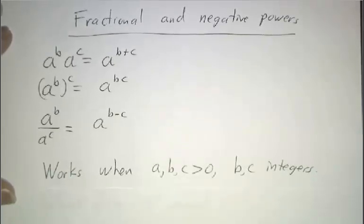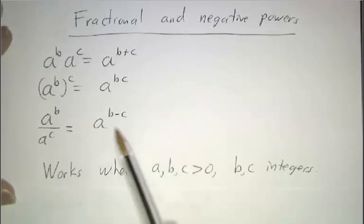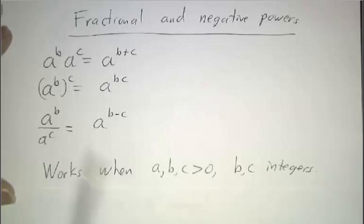Those laws work wonderfully as long as we were talking about integer powers. b and c had to be integers, and for that matter, b minus c has to be a positive integer. And we wanted a to be a positive number that you can multiply over and over again.